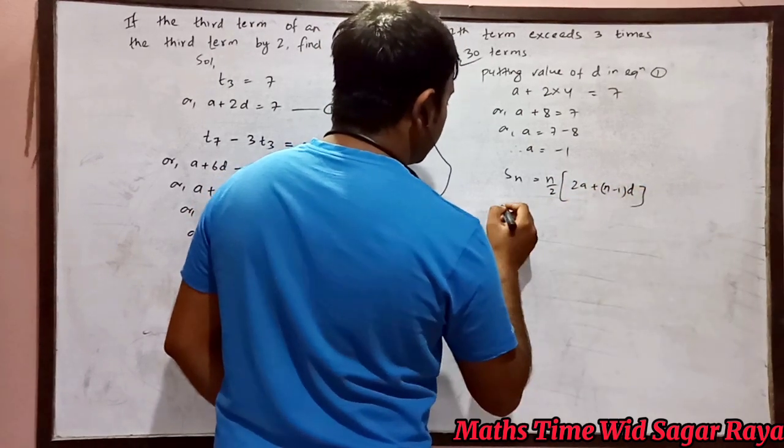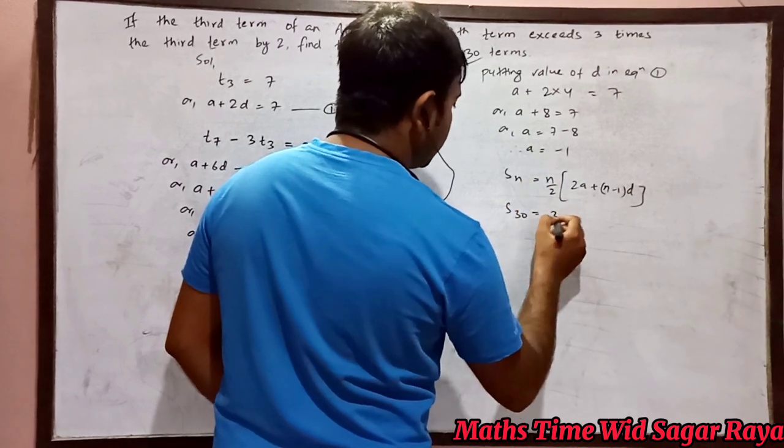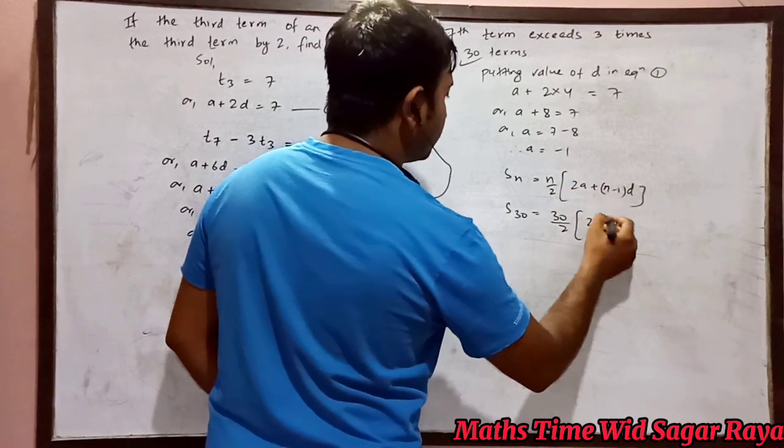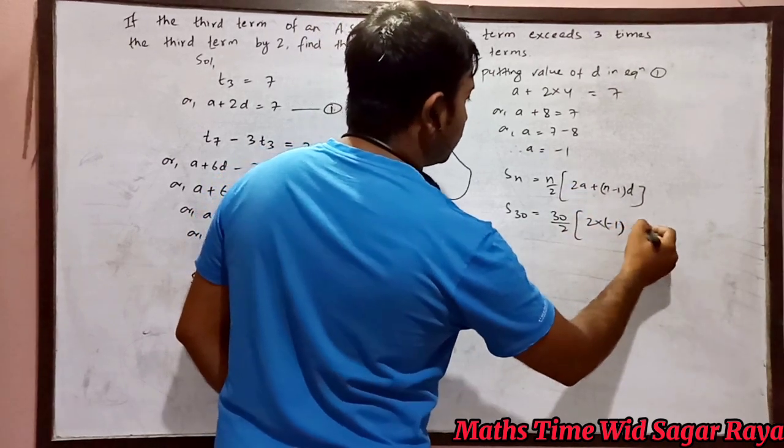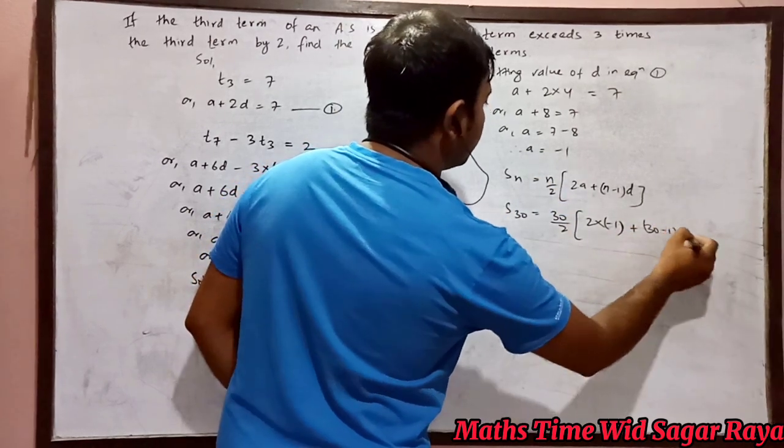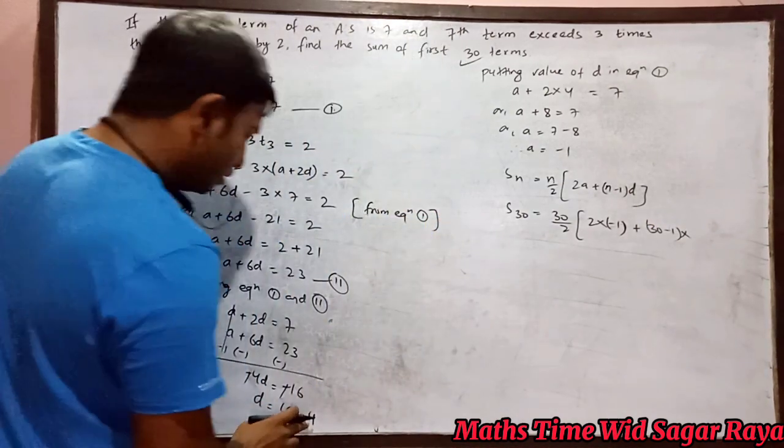So S30, replace n by 30. So 30 by 2 times (2 times a, where a is minus 1, plus n equals 30, so 30 minus 1, times d, where d is 4).